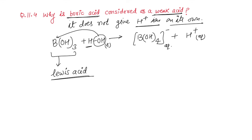So, why is it a weak acid? Because it will not give H+ ion on its own, but it accepts OH- ion from water and then it will give H+ ion. Means, H+ ion is not given by H3BO3, boric acid, but it forces water to release H+ ion. That's why it is a weak acid.